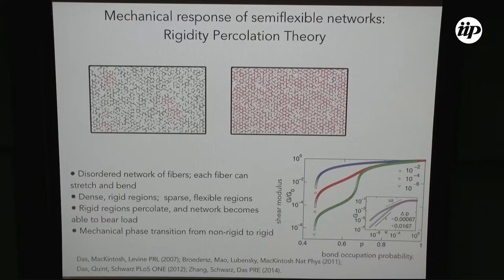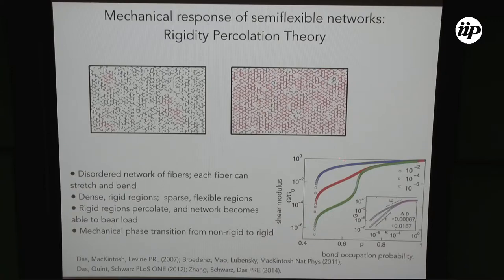To briefly remind you: rigidity percolation theory says that we can model biopolymer networks as disordered networks of fibers. These disordered networks will have rigid regions and sparse regions. When these rigid regions percolate, the whole network will be able to bear mechanical loads. But if your network is floppy and too sparse, it will not be able to bear mechanical loads. So as a function of the density of fibers — in this case the bond occupation probability — you will have a transition where the network has a finite shear modulus to a shear modulus close to zero when it loses rigidity. So that was then the next hypothesis — maybe that's what's going on here.